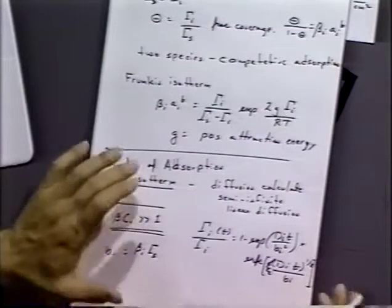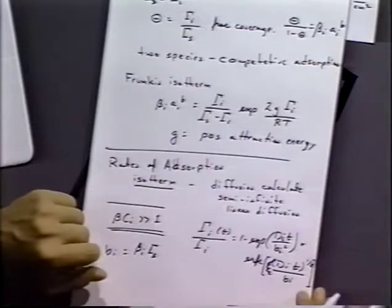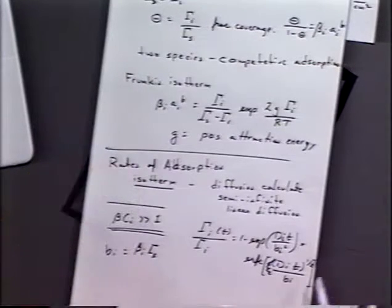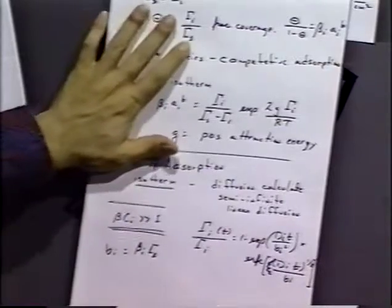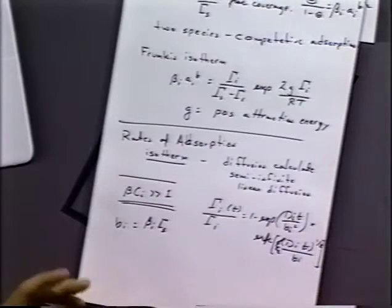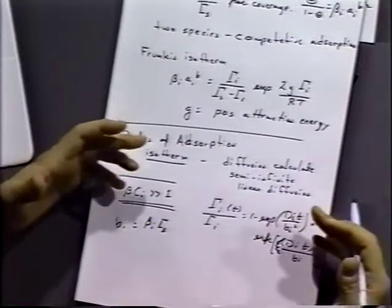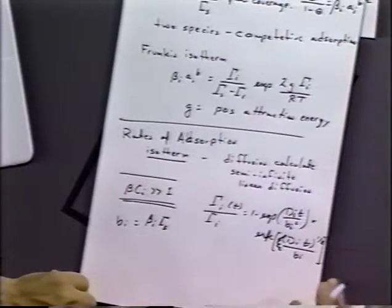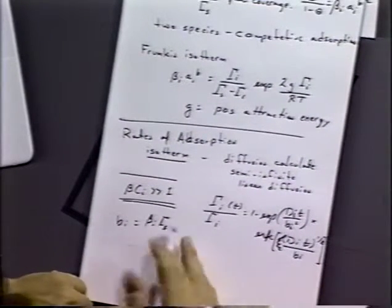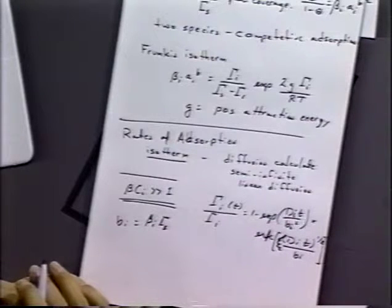There would be another term: times the error function complement of (D_i times t^(1/2)) over b_i. If you look at this, it actually looks very similar to the result we derived for some of the diffusion calculations — that's true. All we're doing is substituting in the different boundary condition and getting a very similar result. It's kind of like a potential step experiment for a reversible case, almost exactly what the form of that equation is, because it's the same equation you're solving with different boundary conditions.